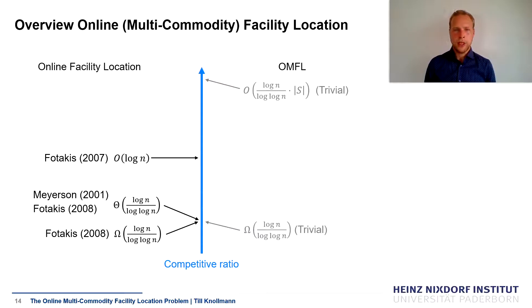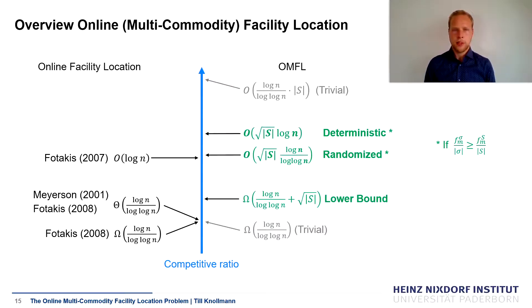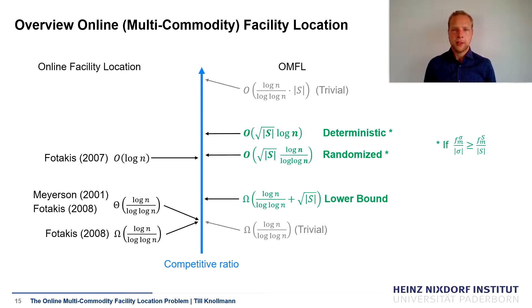In our work, we had a closer look and found a lower bound which also incorporates the number of commodities. We found two algorithms — a deterministic one and a randomized one — with a non-trivial competitive ratio. They both work under a slight condition on the construction cost function, namely that the average construction cost per commodity you offer is minimal if you include all commodities. The deterministic algorithm is based on the one by Fotakis presented in 2007. The randomized algorithm is based on the randomized algorithm of Meyerson for the original problem, but includes tricks to deal with multiple commodities.